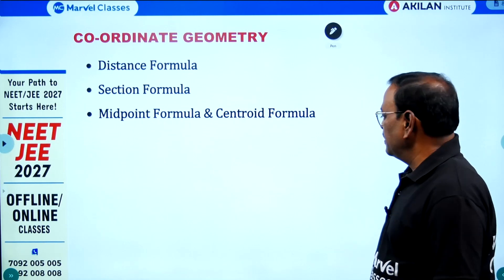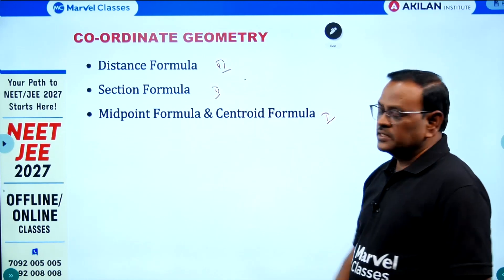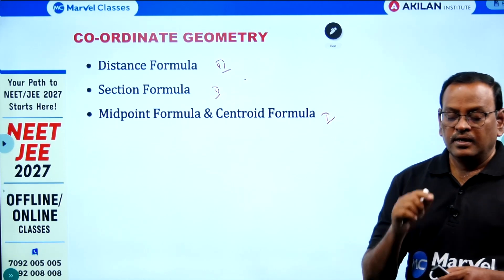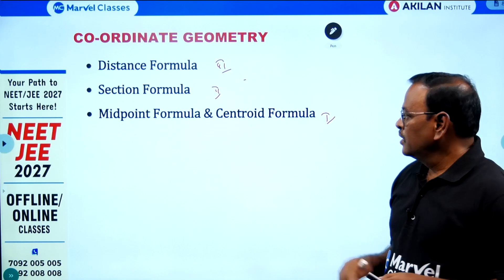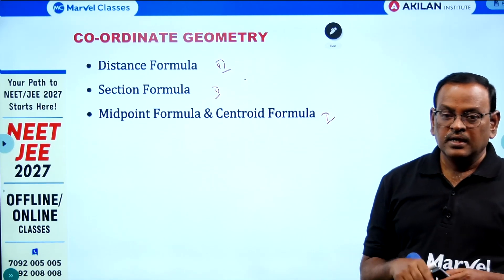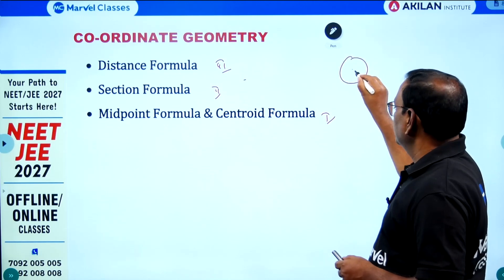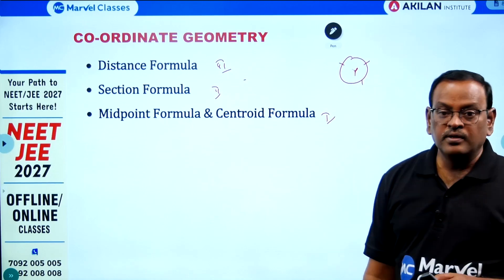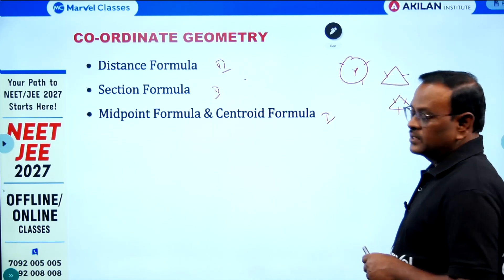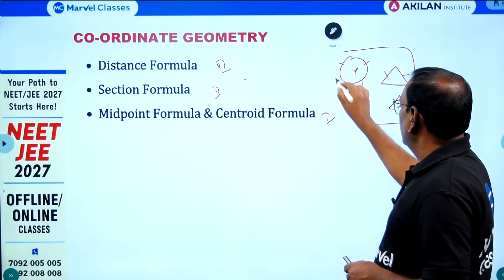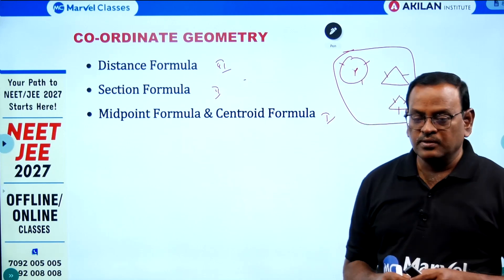Coordinate Geometry: distance formula, section formula, midpoint formula, and centroid formula. Distance formula is very important. If three points are given, first verify whether they are collinear or not. If not collinear, find the type of triangle formed — equilateral, scalene, right, isosceles, or isosceles right triangle. Also important: if three points on a circle are given, find the circumcenter and circumradius. Third vertex of an equilateral or isosceles triangle are also standard questions. For four points, identify parallelogram, rectangle, square, or rhombus.